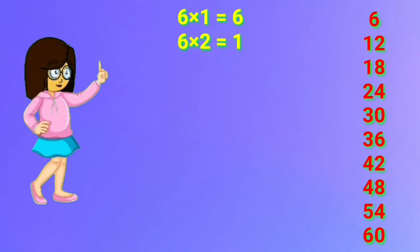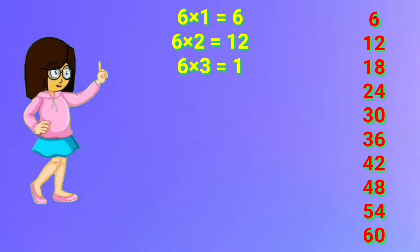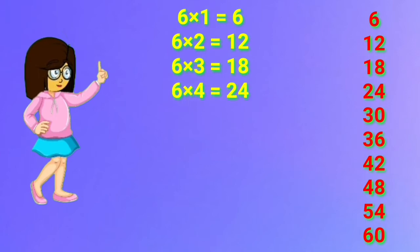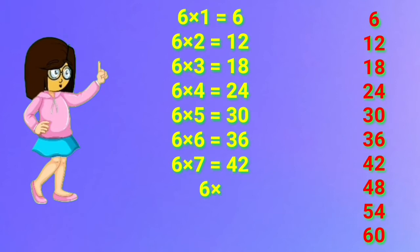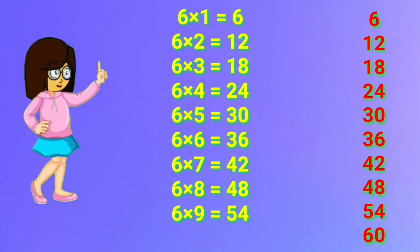6 one's are 6. 6 two's are 12. 6 three's are 18. 6 four's are 24. 6 five's are 30. 6 six's are 36. 6 seven's are 42. 6 eight's are 48. 6 nine's are 54. 6 ten's are 60.